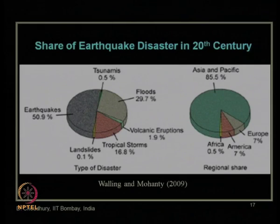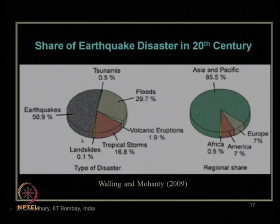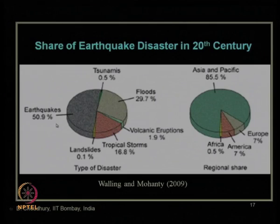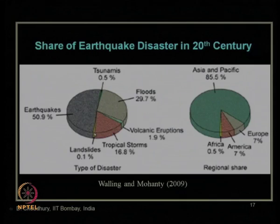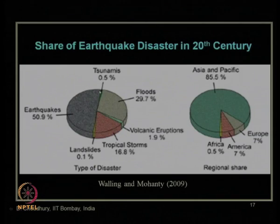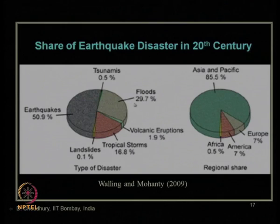We had also discussed the share of earthquake disaster in the entire 20th century as given by Wehling and Mohanthi in 2009. In this pie chart, one can easily see why research in earthquake engineering is needed, because among all disasters in the entire 20th century, the share of earthquake disaster is the maximum — more than 50 percent, about 51 percent. The second highest is flood-related disasters, close to 30 percent.